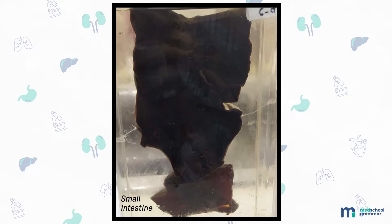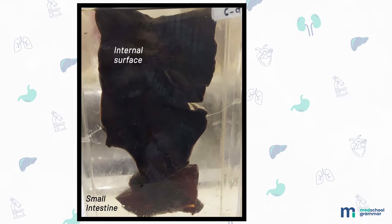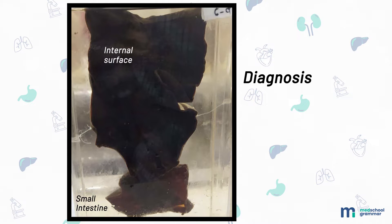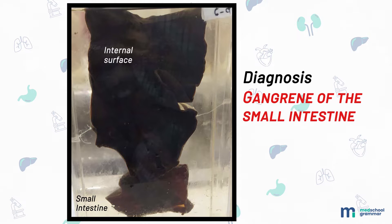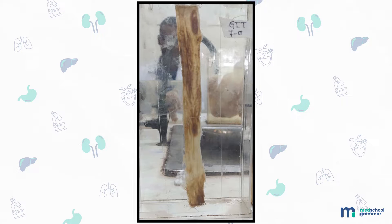Next we have a specimen of the small intestine measuring 20 centimeters in length. The external surface is congested, hemorrhagic, and blackish in color. The internal surface is hemorrhagic, edematous, and blackish. The entire thickness of the small intestine is congested. There is no evidence of perforation and no normal part of intestine is seen. The diagnosis: this is a specimen of gangrene of the small intestine.